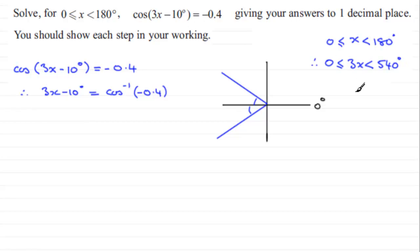Then we've got to subtract 10. So if I subtract 10 from each of these three values, I then end up with -10, and then here we've got 3x - 10, and 540 take 10 is 530 degrees. So this gives us our range for the angle 3x - 10 between -10° and 530°.